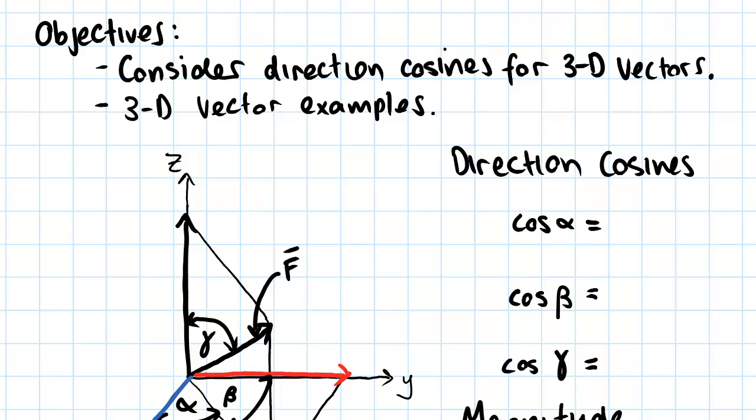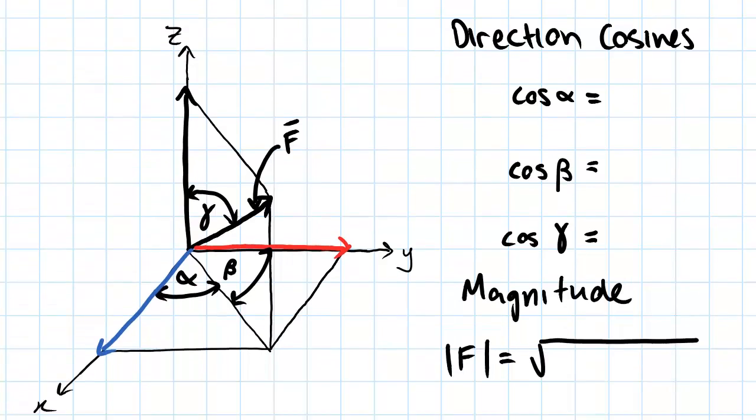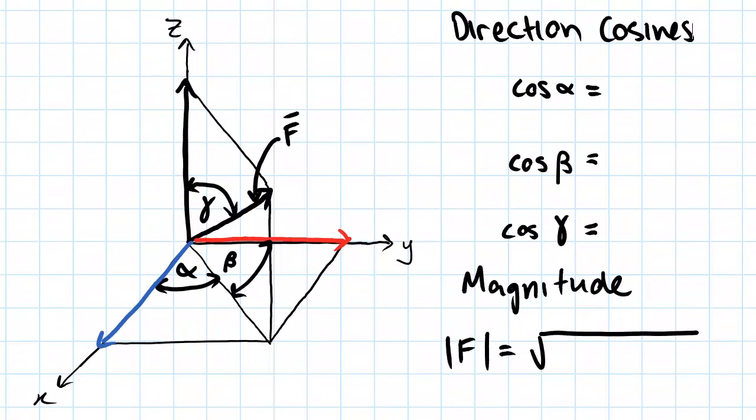We'll start off by looking at this plot here. What this plot shows is a vector F, and it's been broken down into its x, y, and z components. This component here we'll call Fx, this component in the y direction we'll call Fy, and this component here we'll call Fz.